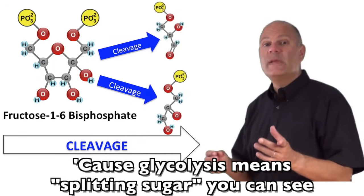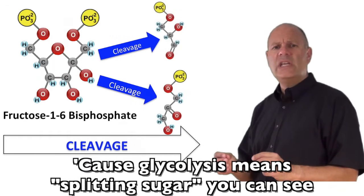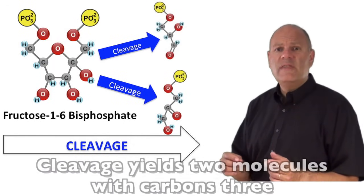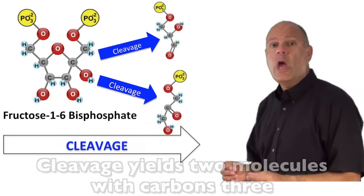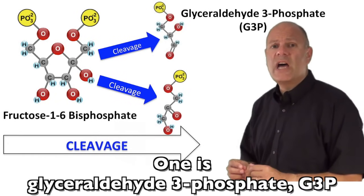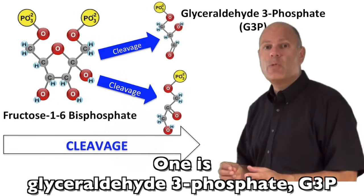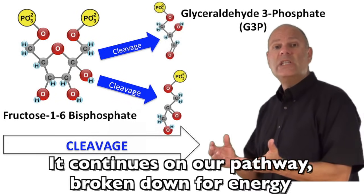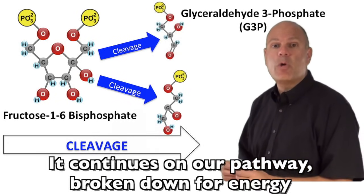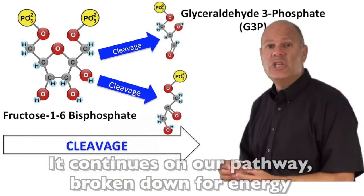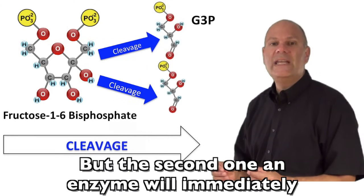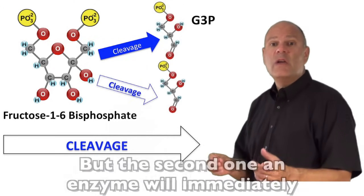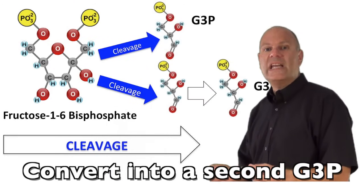Because glycolysis means split in sugar, you can see. Cleavage yields two molecules with carbons three. One is glyceraldehyde 3-phosphate, G3P. It continues on our pathway, broken down for energy. But the second one, an enzyme will immediately convert into a second G3P.